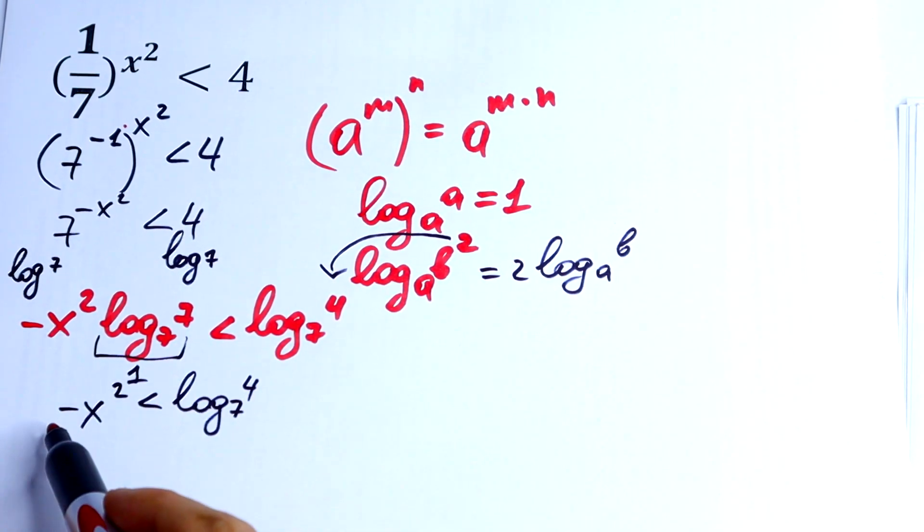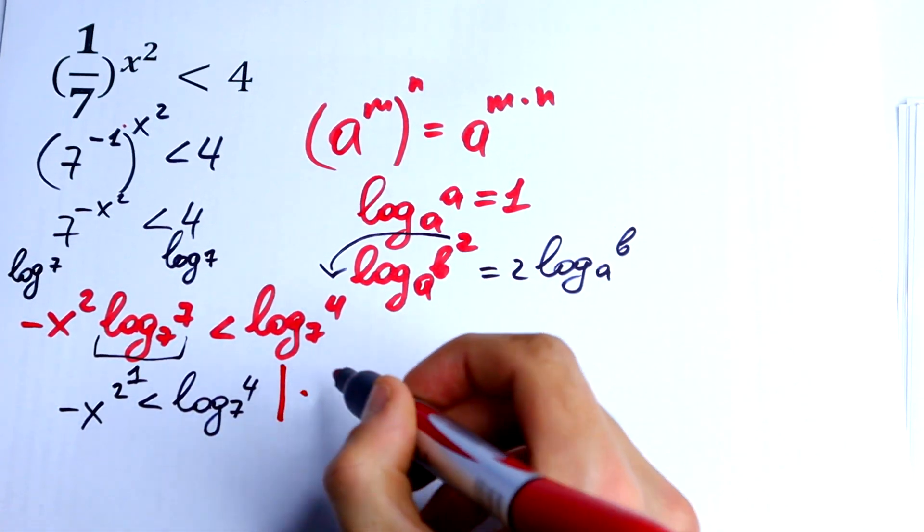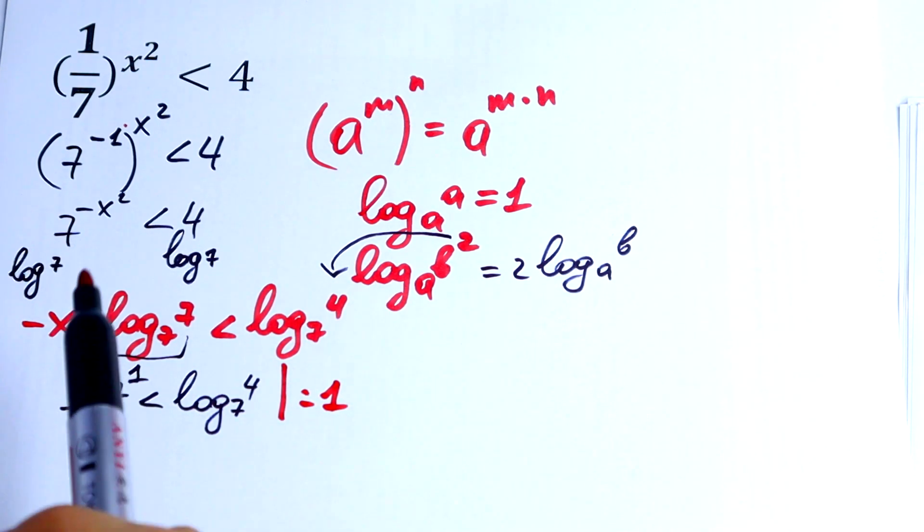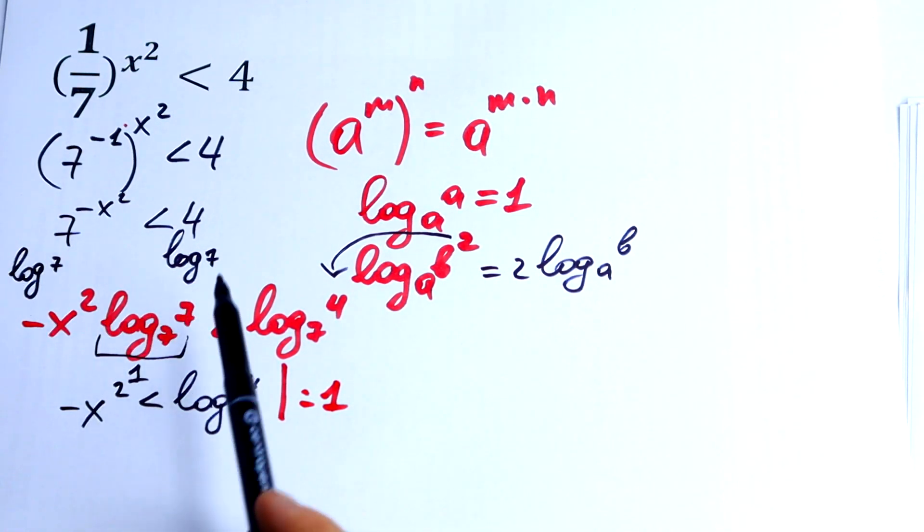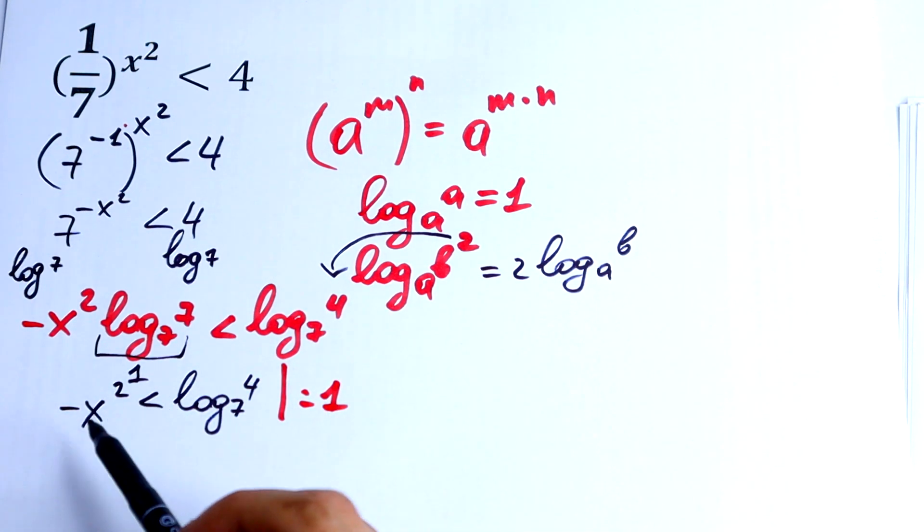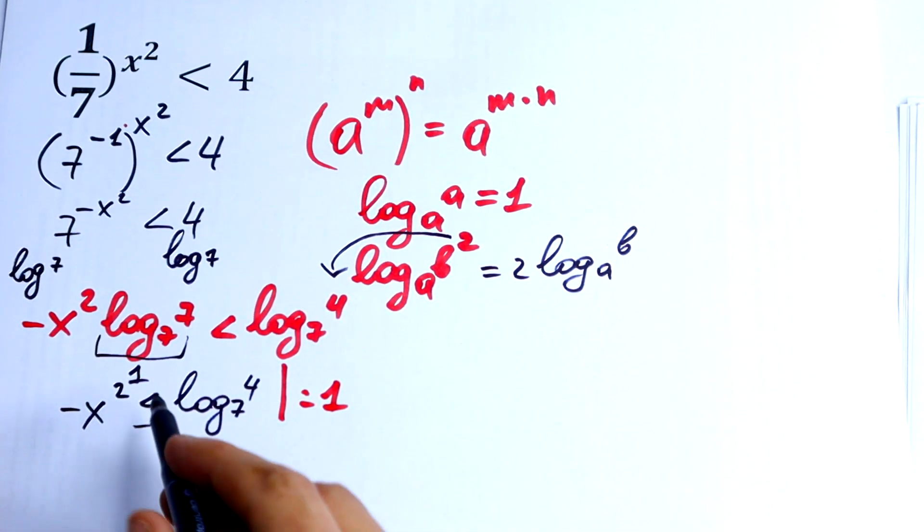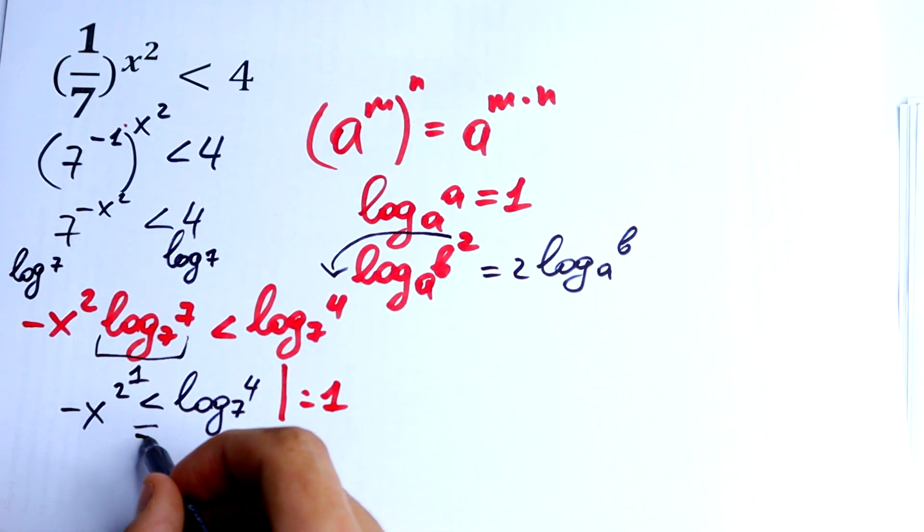Now we just need to multiply our both sides by minus 1, because we have minus right here. And if we multiply both sides by minus 1, our inequality sign turns in a different way.